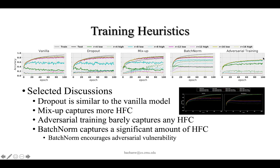Finally, we study adversarial training, which is currently one of the most successful adversarial defense methods. We have multiple observations, and here we only highlight one: batch norm seems to capture a significant amount of high-frequency signals. This may actually help explain how batch norm manages to improve the empirical performance of many models, and it aligns very well with the observation that batch norm encourages adversarial vulnerability.